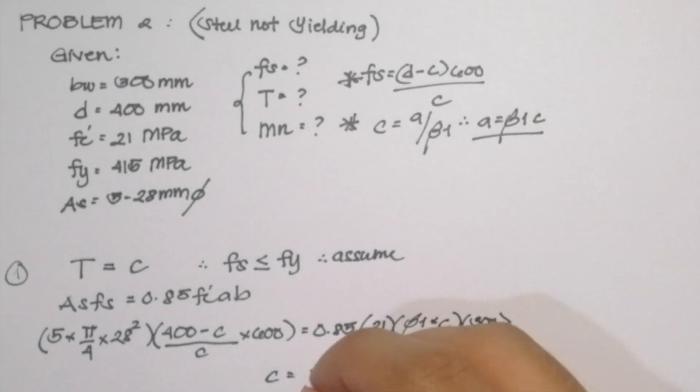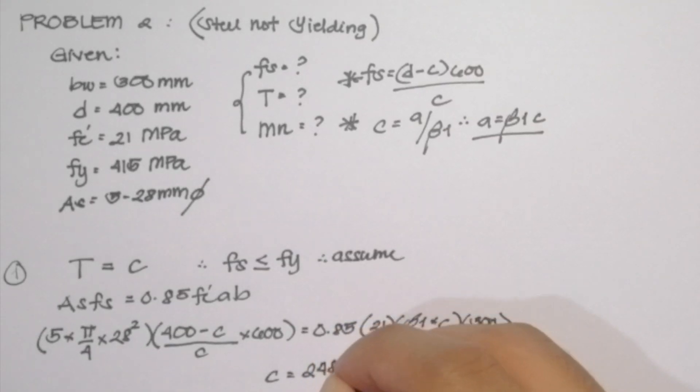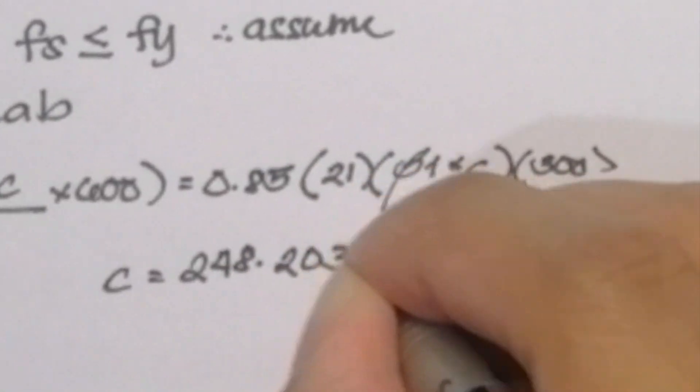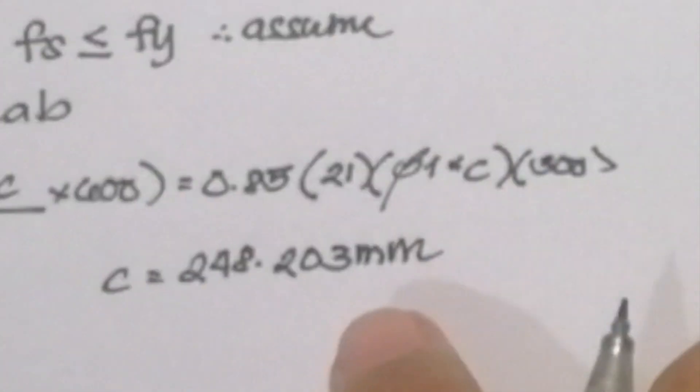So by computation, our C is equal to 248.203 millimeters. So that is the depth of our neutral axis.